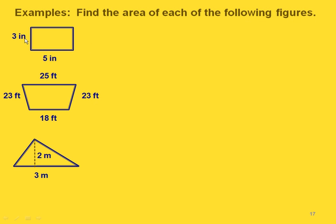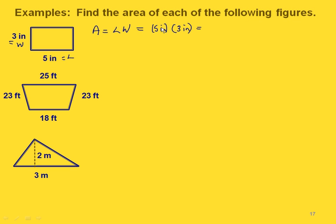Let's do some examples. Here we have a rectangle with a length of five inches and a width of three inches. So our area is length times width, which is five inches times three inches. We can write the answer as 15 square inches.